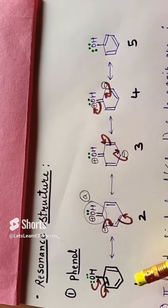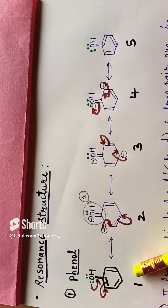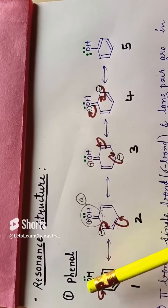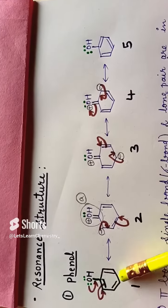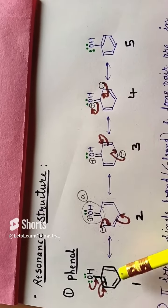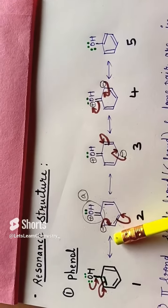Let's see for this phenol how many resonance structures are possible. Here, double bond, single bond, and lone pair are in conjugation, so this molecule shows resonance. Resonance is shown by a double-headed arrow.